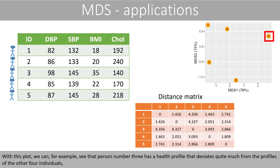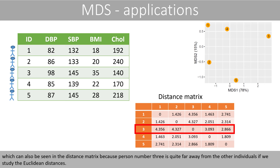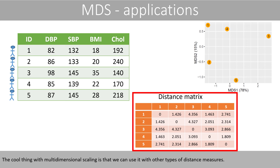With this plot, we can see that person number three has a health profile that deviates quite much from the profiles of the other four individuals, which can also be seen in the distance matrix because person number three is quite far away from the other individuals if we study the Euclidean distances. The cool thing with multidimensional scaling is that we can use it with other types of distance measures.